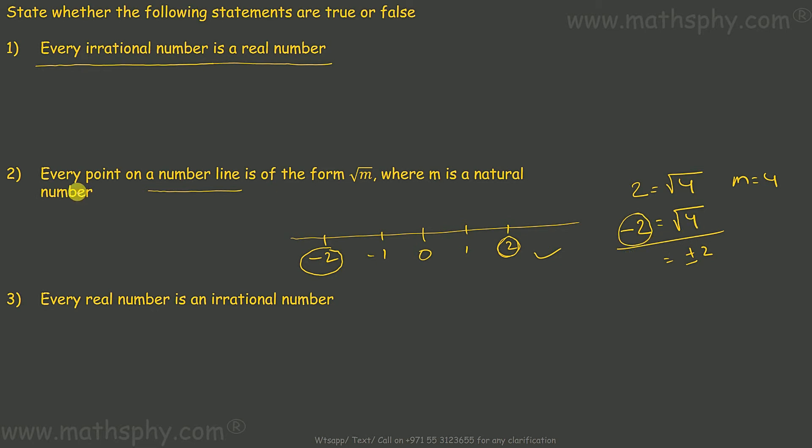So every point on a number line is of the form root M where M is a natural number does not work. This is false.